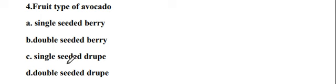Question number 4: Fruit type of avocado — options are: option A single seeded berry, option B double seeded berry, option C single seeded drupe, and option D double seeded drupe. The right answer is single seeded berry.